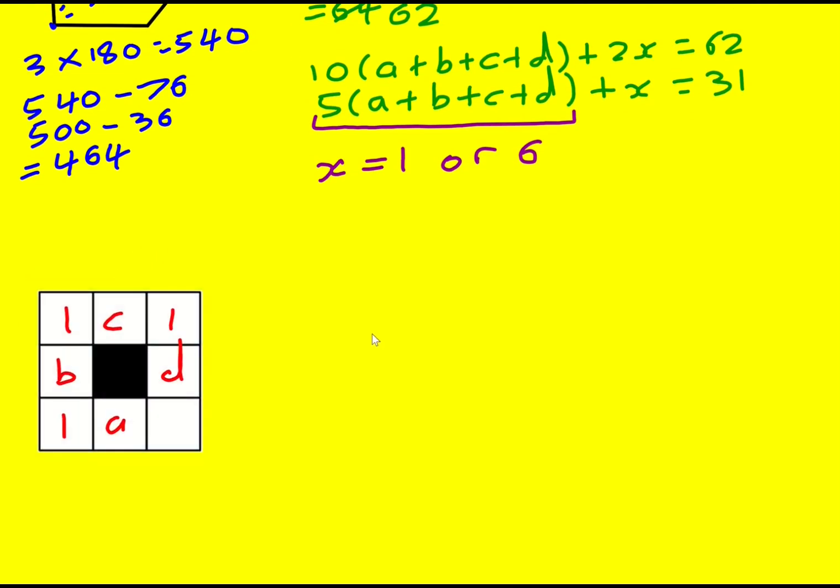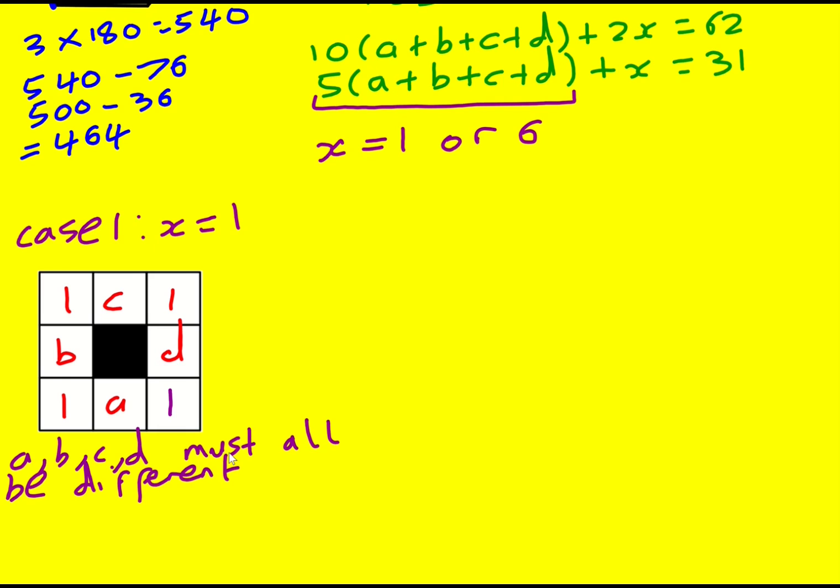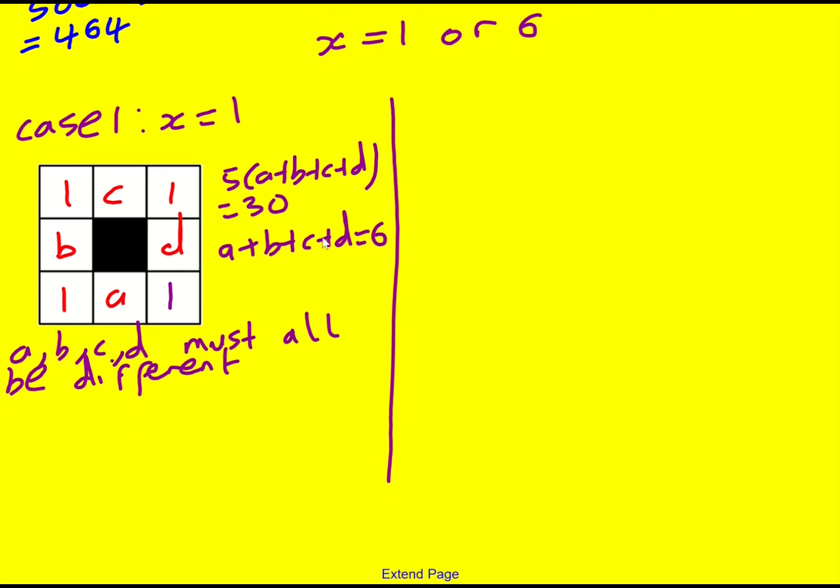Let's take a look at case number 1. x equals 1. So then I can put a 1 here. Note now that a, b, c, d must all be different, because otherwise if some of them were the same, I would get two at the same angle. We can see that in this case we're going to get 5 lots of a plus b plus c plus d equaling 30, and therefore a plus b plus c plus d must equal 6. Because they're all different, then we cannot avoid having 0, 1, 2, and 3, because you can't have any bigger numbers, because the total would then be more than 6.